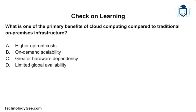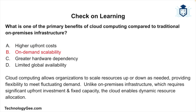Final question: What is one of the primary benefits of cloud computing compared to traditional on-premises infrastructure? Options are: higher upfront costs; on-demand scalability; greater hardware dependency; or limited global availability. The correct answer is on-demand scalability. Cloud computing allows organizations to scale resources up or down as needed, providing flexibility to meet fluctuating demand. Unlike on-premises infrastructure, which requires significant upfront investment and fixed capacity, the cloud enables dynamic resource allocation.